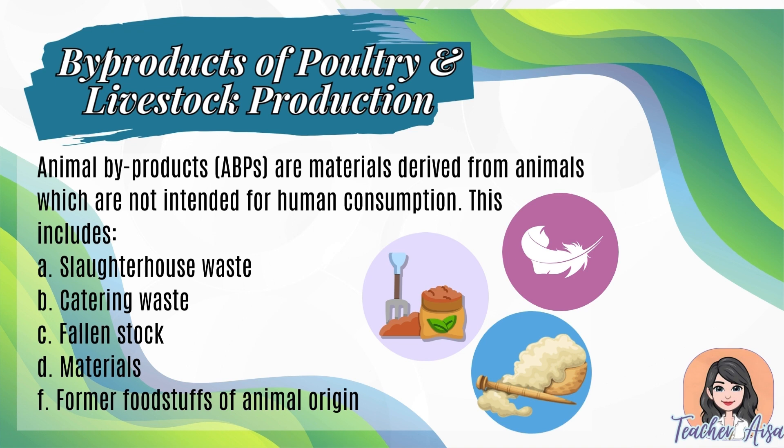b) Catering waste — materials used in the entire livestock production process, including food waste, plastics and packaging of feeds, glass bottles of medicines, boxes, and cardboards. c) Fallen stock — farm animals that died due to natural causes, diseases, or were killed prior to harvest.